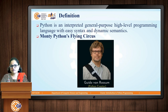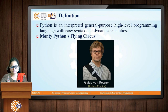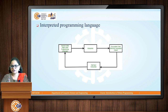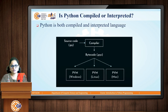The definition of Python programming is: Python is an interpreted, general purpose, high-level programming language with easy syntax and dynamic semantics. Python is an interpreted programming language, meaning your code is interpreted or executed line by line on the computer. Your whole program is not converted into executable code all at once; each instruction is interpreted line by line.